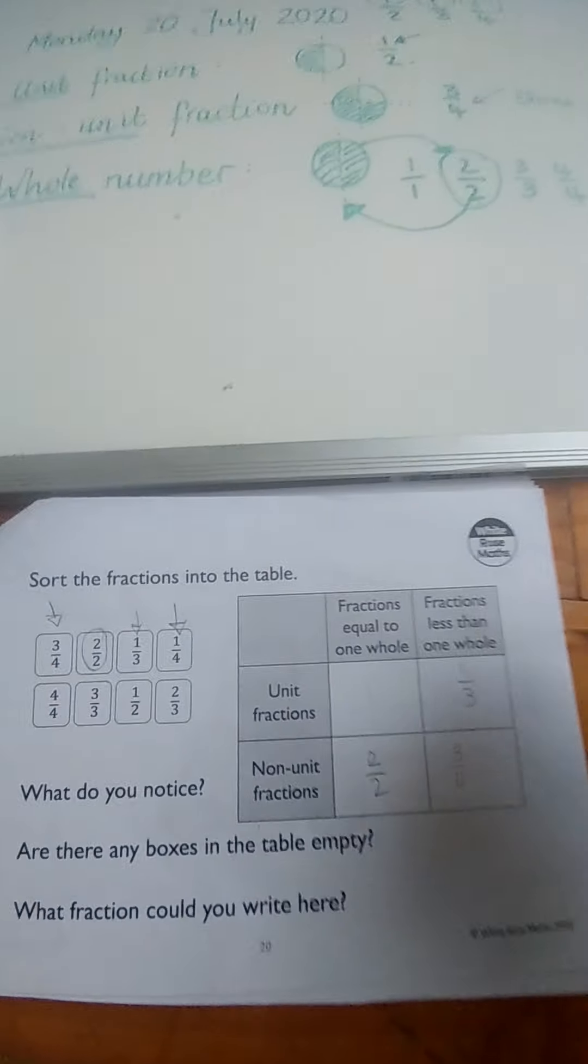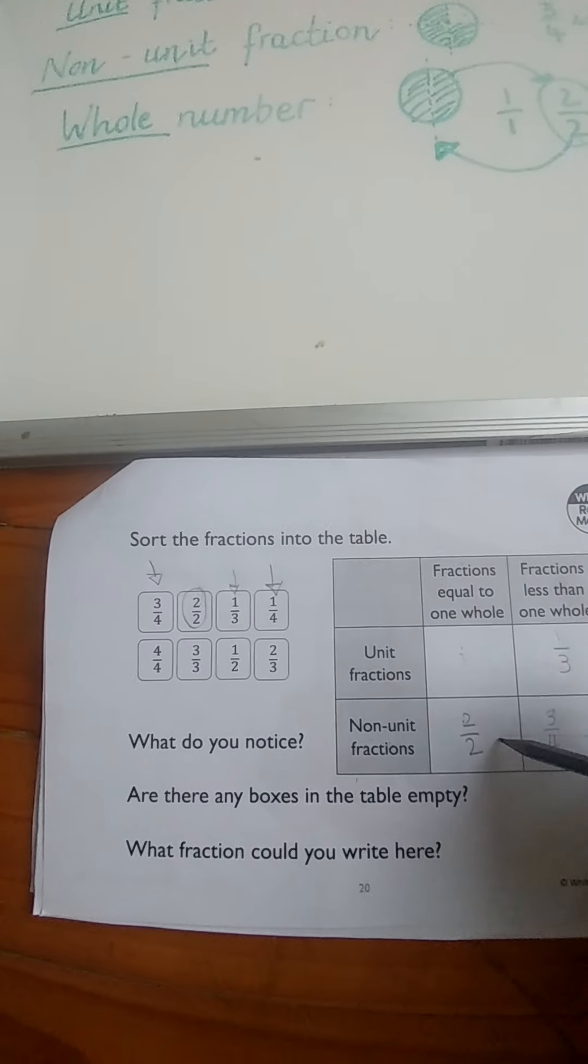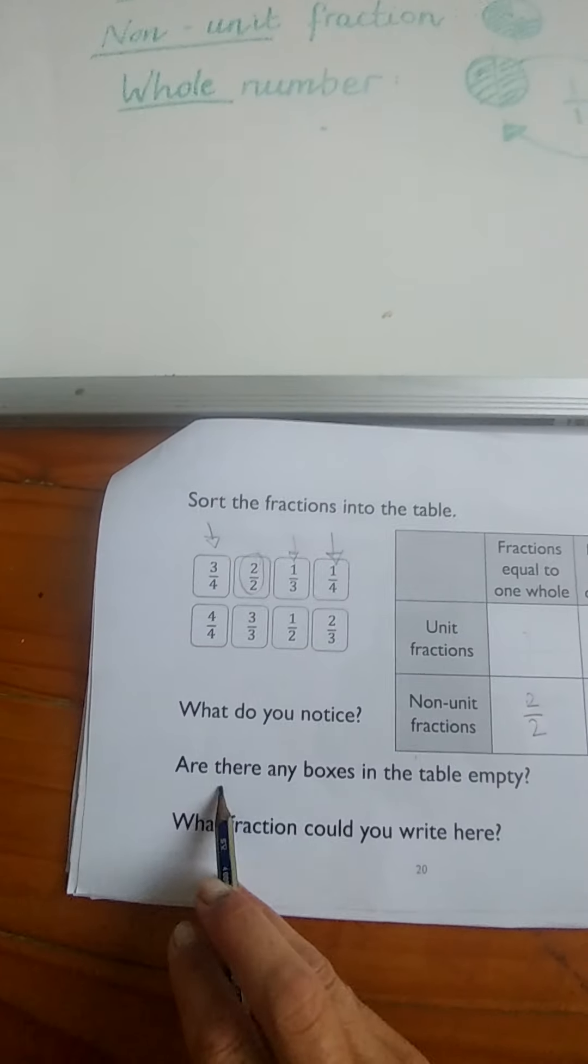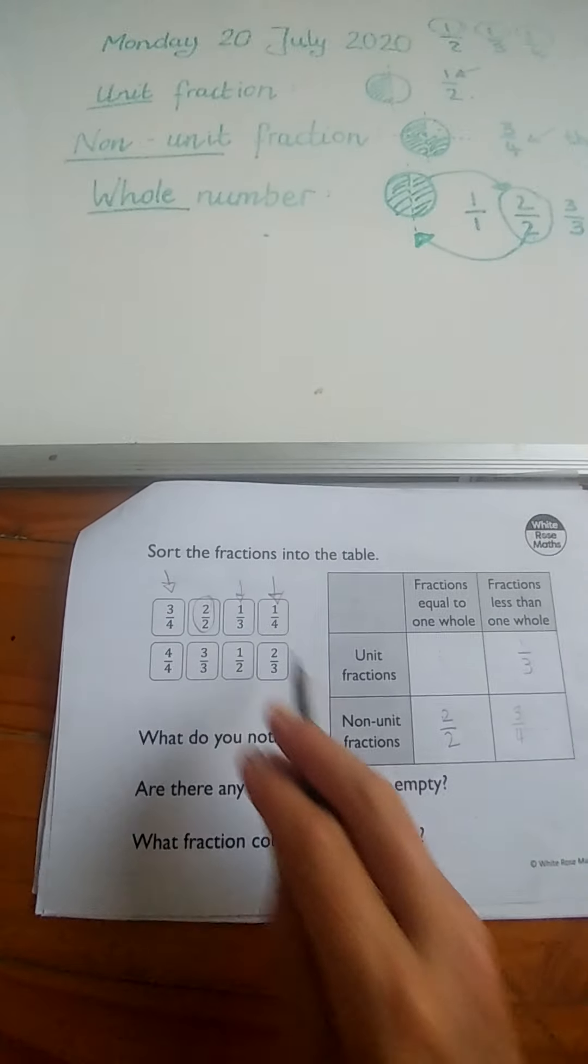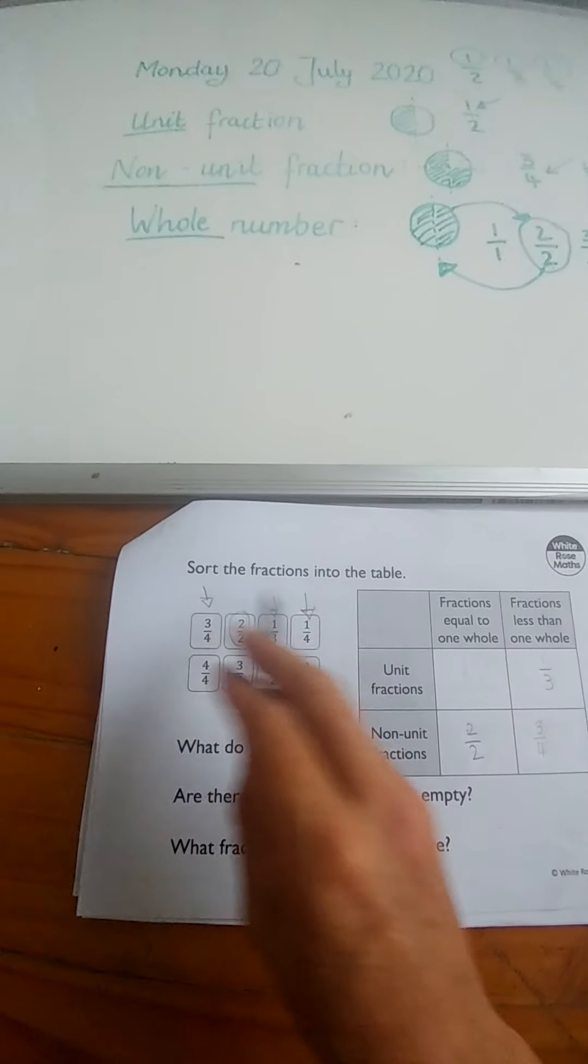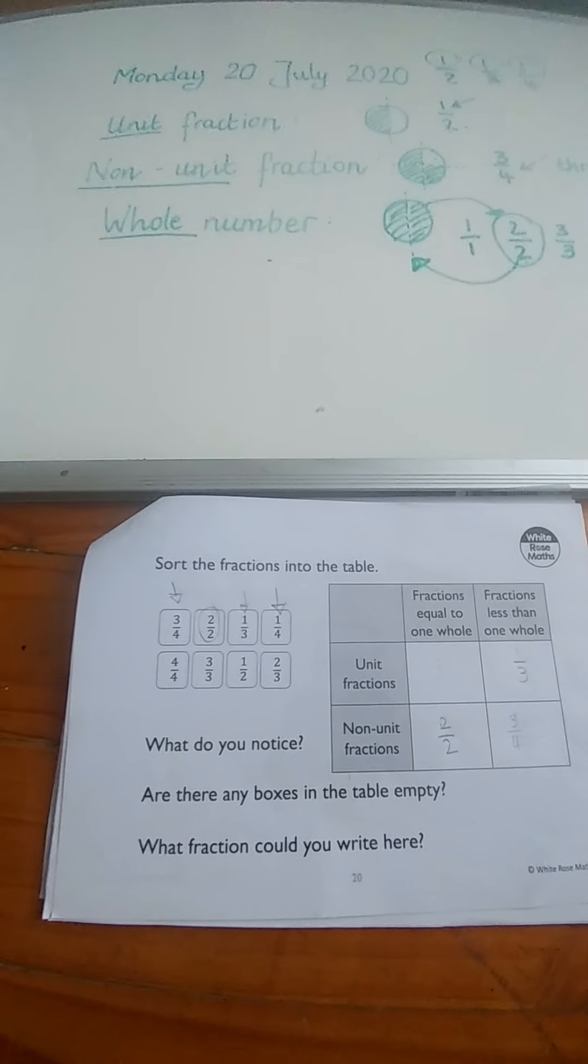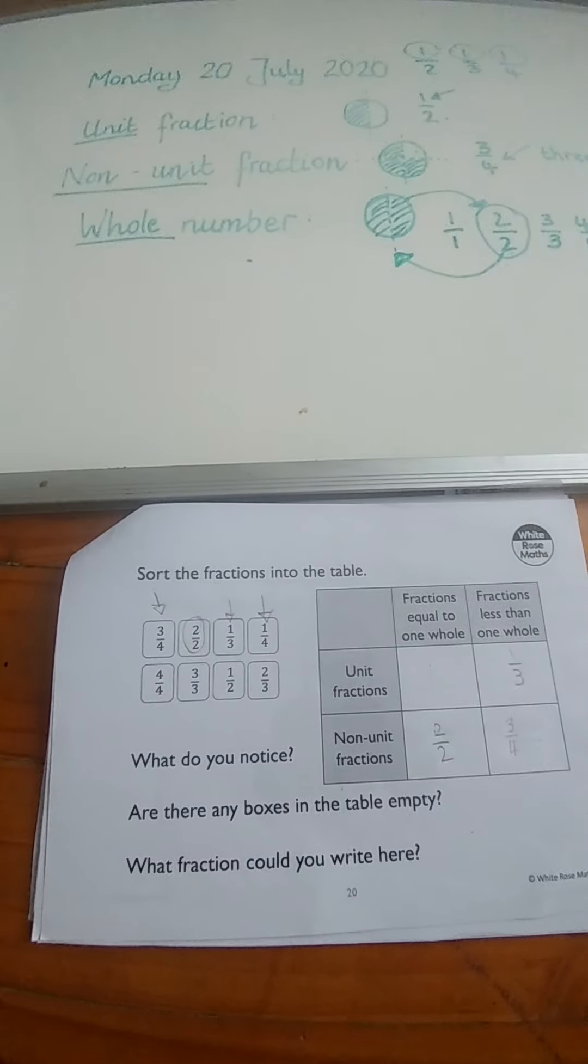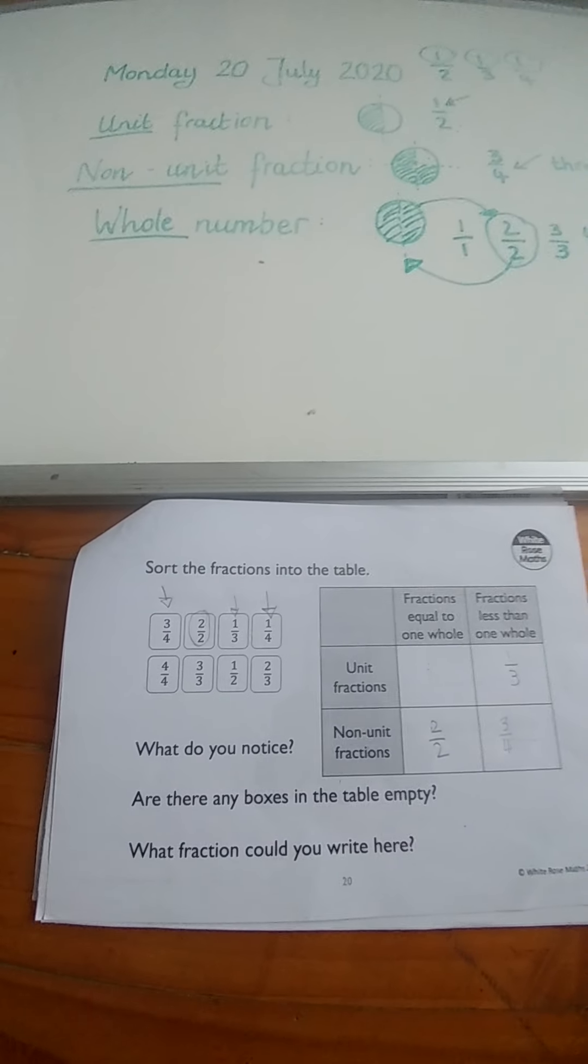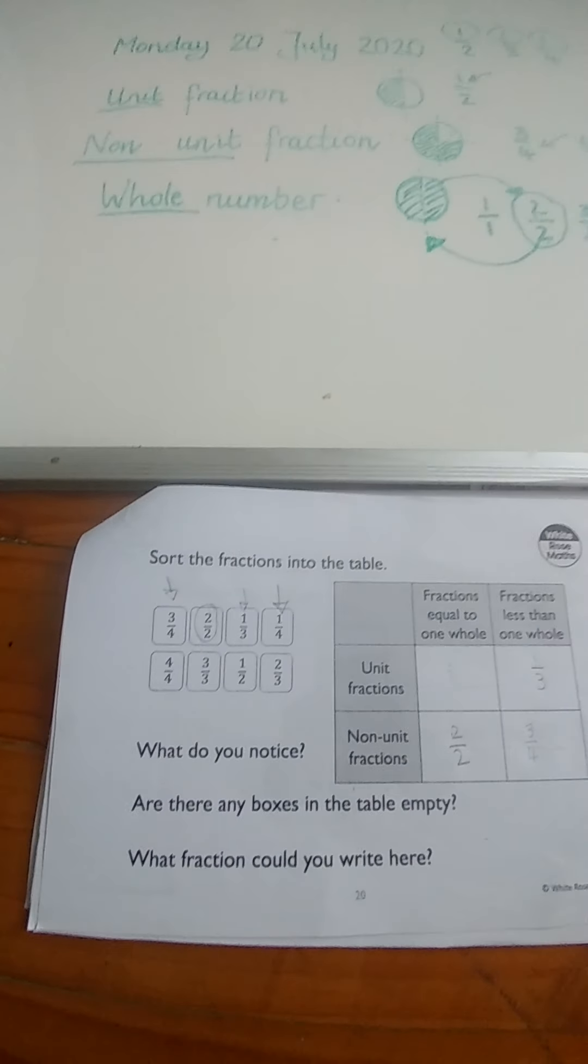So I've put three in here for you. Then it says, are there any boxes in the table empty? So when you've finished sorting all eight of these numbers into a different box, see if there is a box empty and what number you could possibly put in that box to make the box correct.